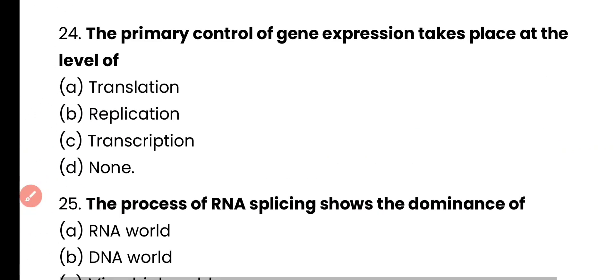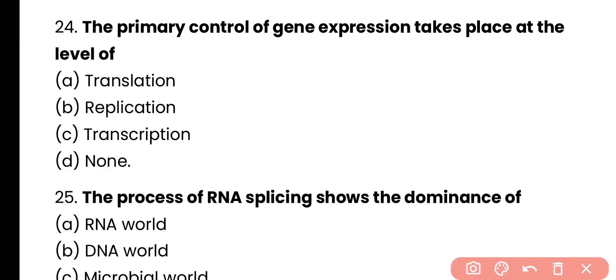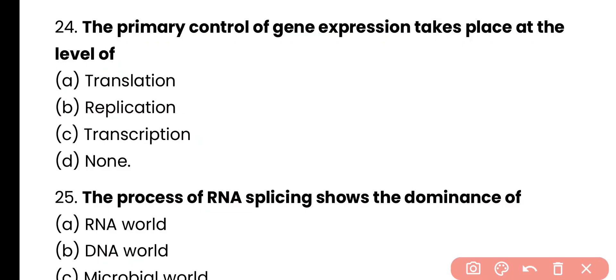Question number 24. The primary control of gene expression takes place at the level of translation, replication, transcription, or none of these? Correct answer is option C. In case of both eukaryotes and prokaryotes, gene expression is primarily controlled at the level of transcription, by preventing RNA polymerase from binding with the promoter.